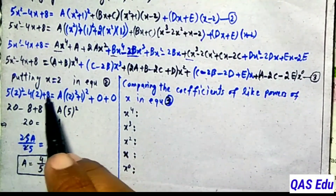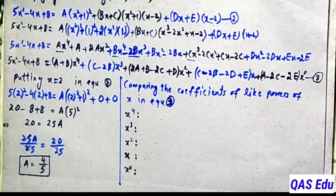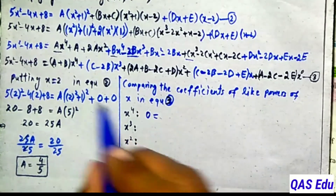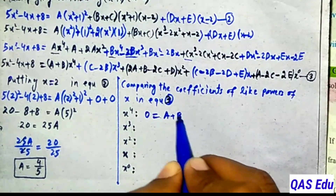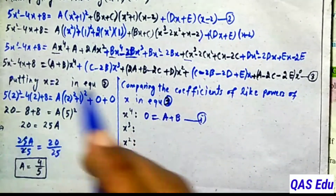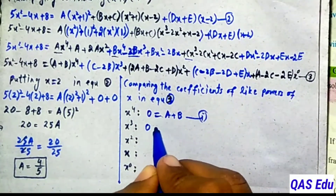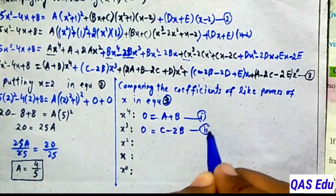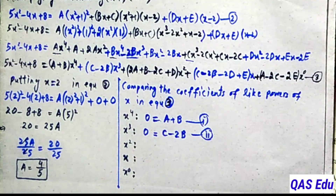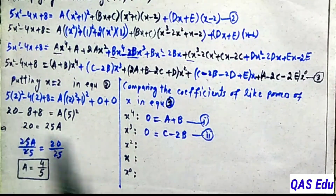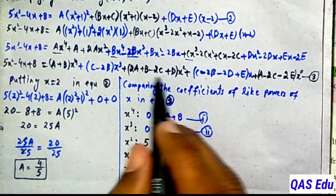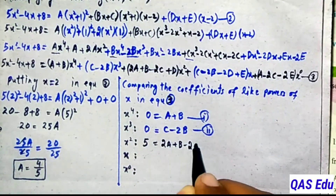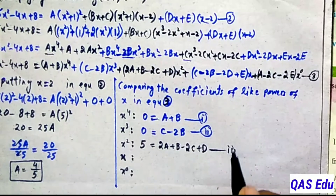Comparing x to the power 4: left hand side has no x to the power 4, so coefficient is 0. Right hand side gives A plus B equals 0 — this is equation number 1. For x cubed: left hand side is 0, right hand side gives C minus 2B equals 0 — equation number 2. For x squared: left hand side coefficient is 5, right hand side is 2A plus B minus 2C plus D — equation number 3.